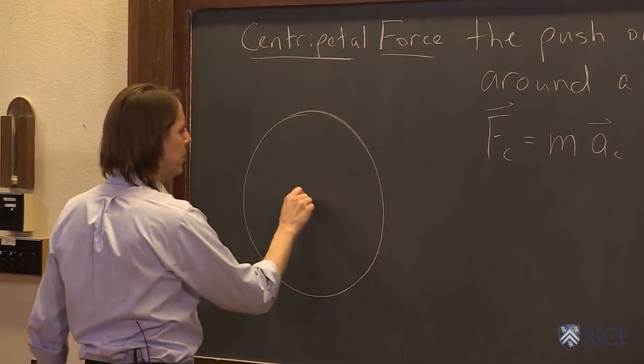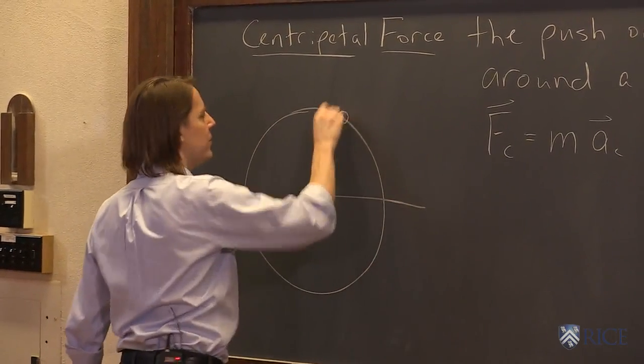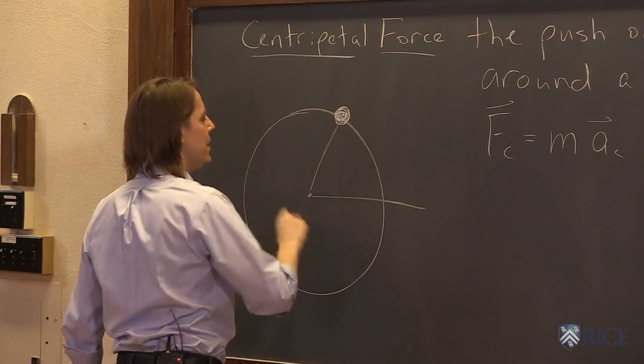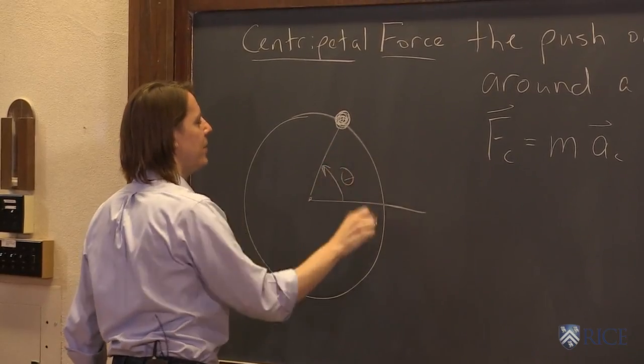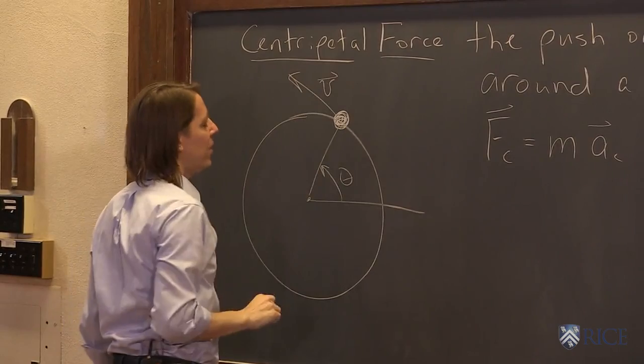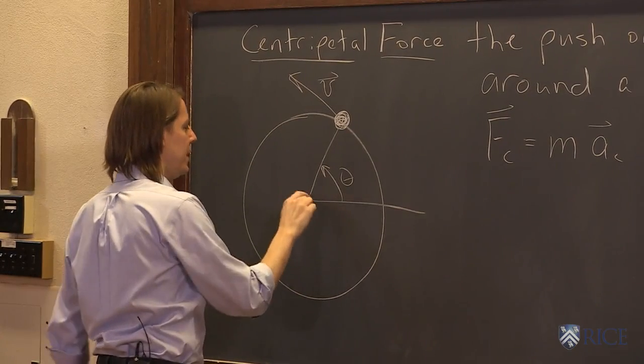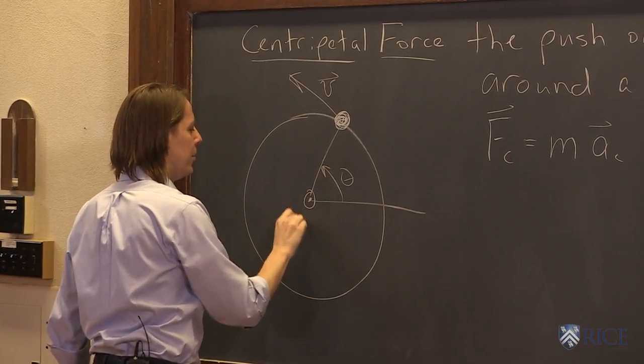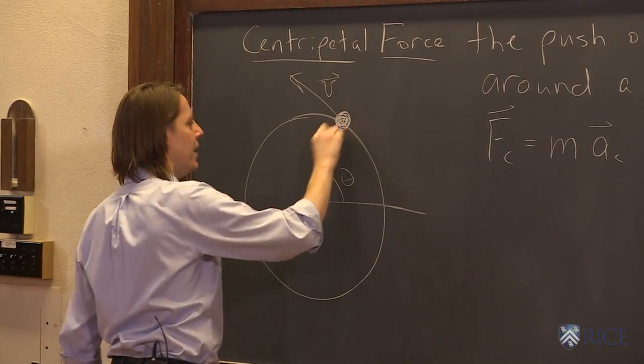So if here's our circle and here's the center and here's our axis and here's our mass there, and it's at some position theta, and it has some speed that way due to a velocity that way, and it has some omega vector that way, it has some centripetal acceleration that way.